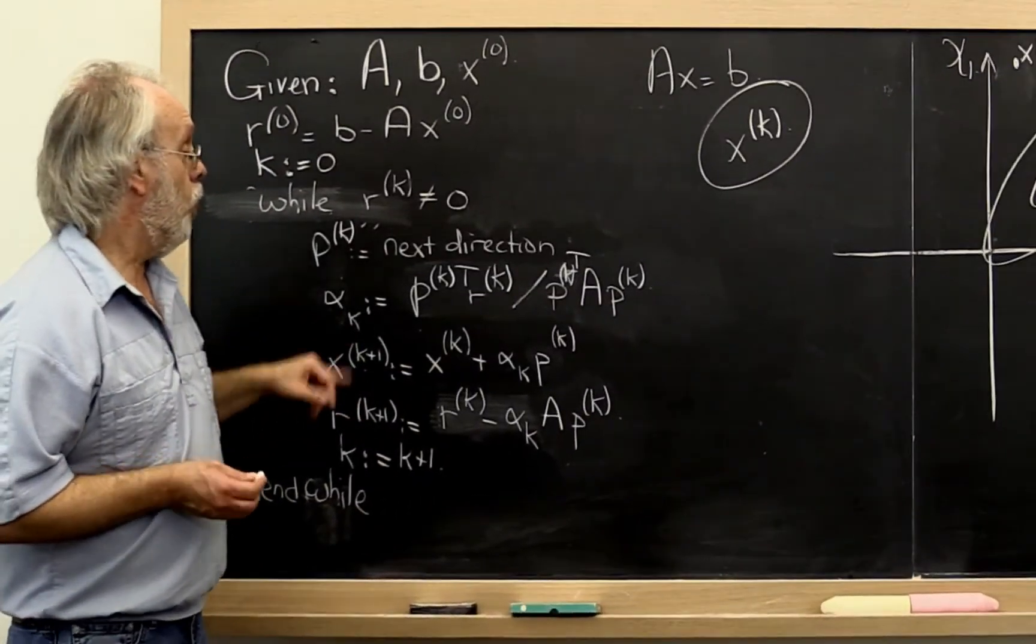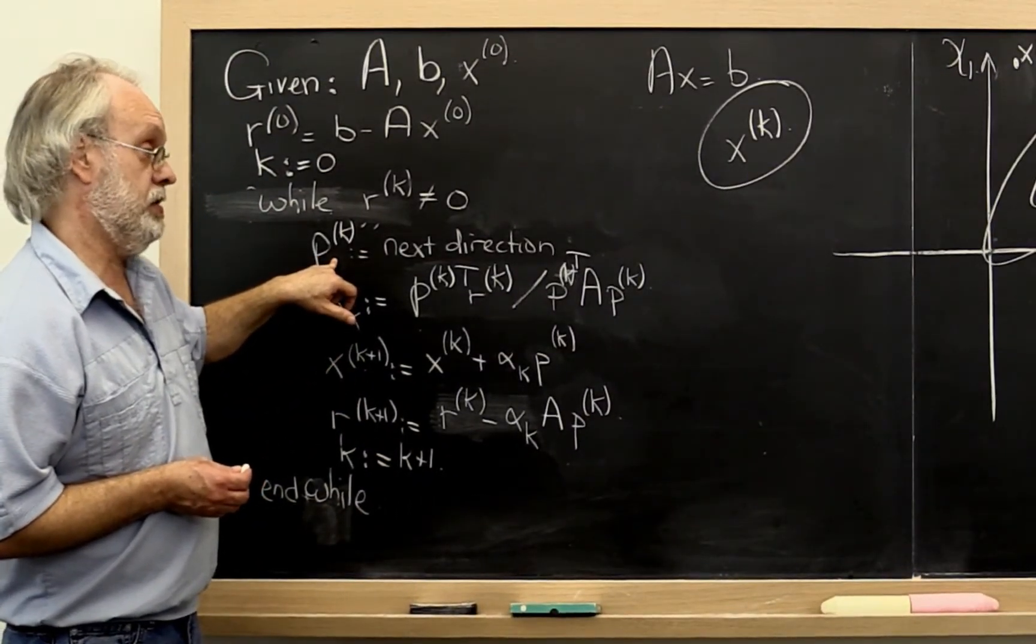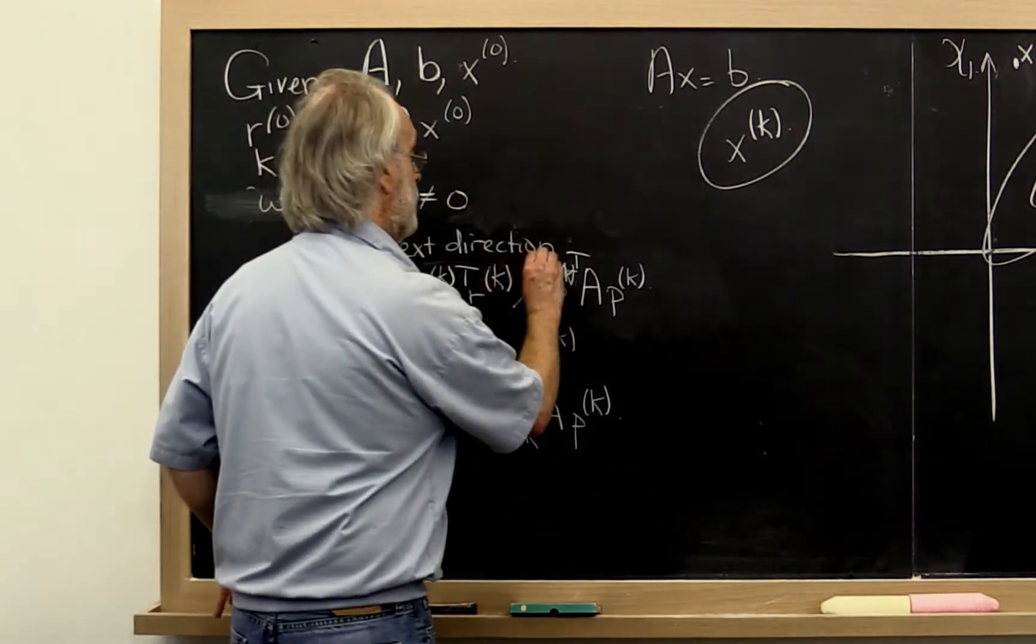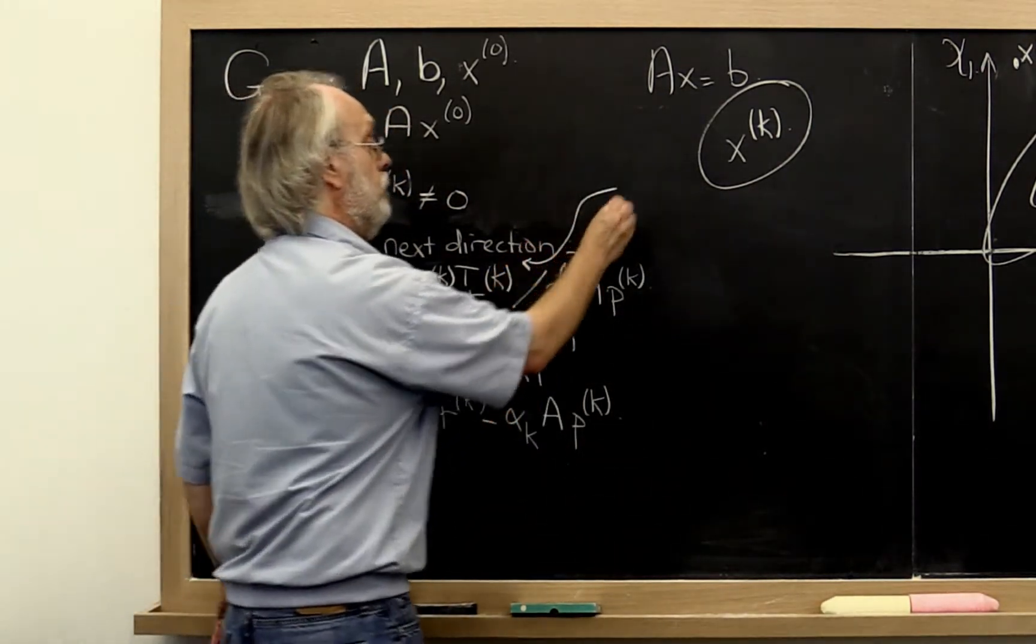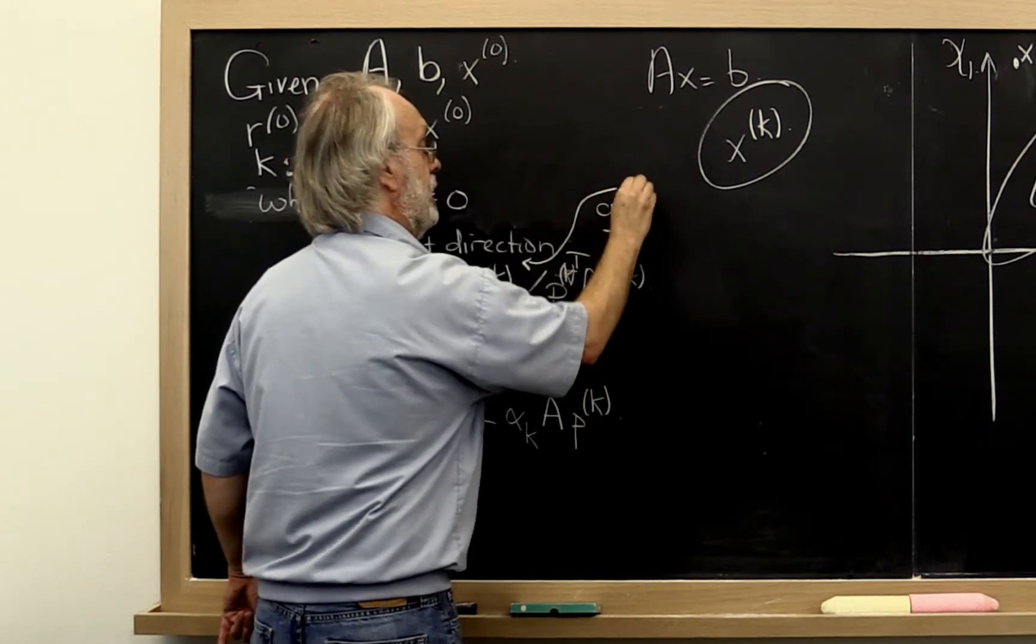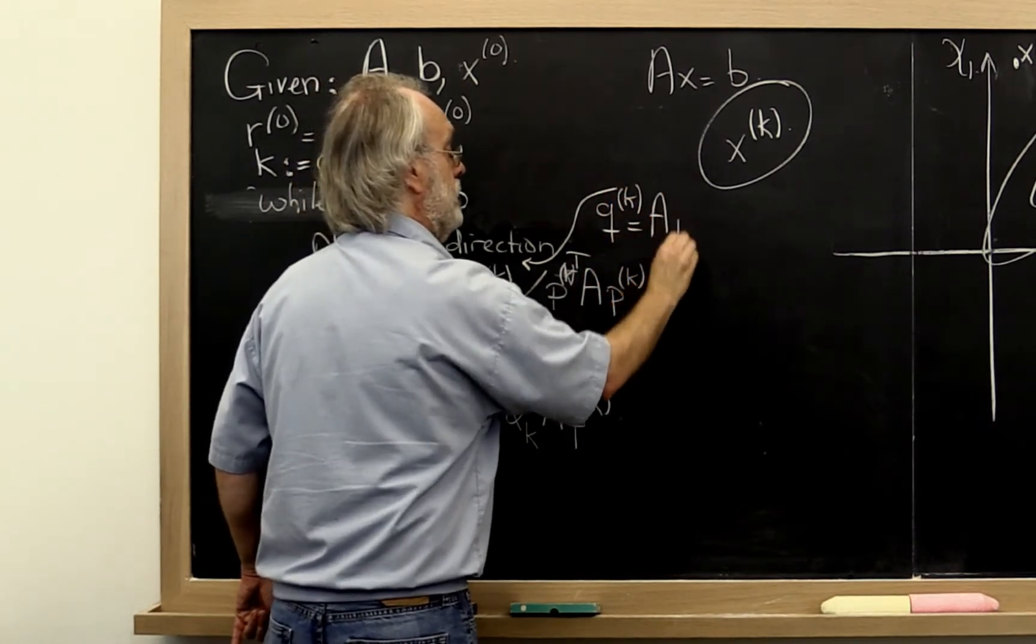So once we've actually determined what the direction is, what we can do is right after that compute vector qk equal to A times pk.